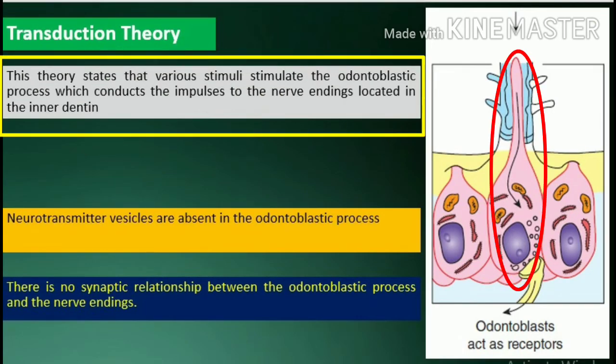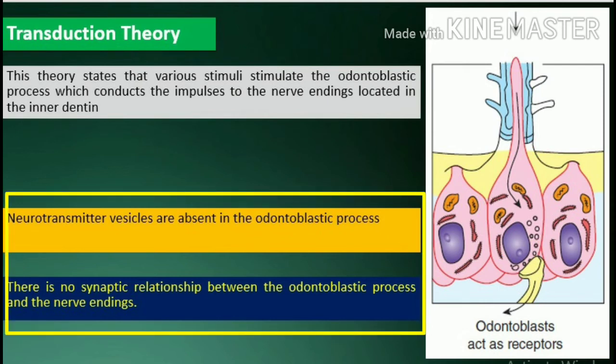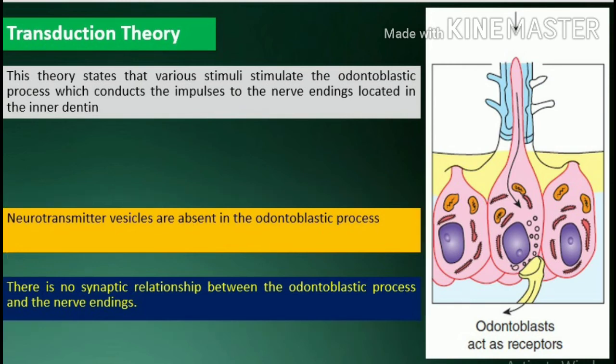Transduction theory: this theory states that various stimuli stimulate the odontoblastic process, which conducts the impulses to the nerve endings located in the inner dentin. Arguments against this theory include: neurotransmitter vesicles are absent in the odontoblastic process, and there is no synaptic relationship between the odontoblastic process and the nerve endings.